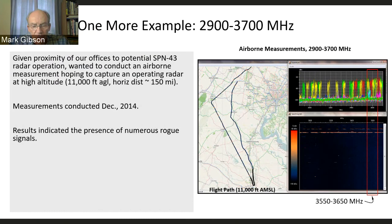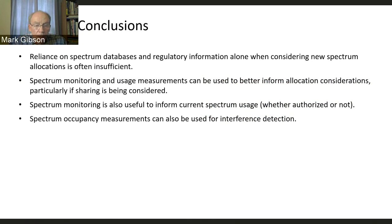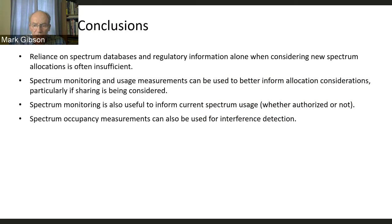In summary: reliance on spectrum databases and regulatory information is insufficient. It's really important to get out and do good measurements using good metrology — and working with the folks at ITS provides the best metrology you're going to find. This also informs allocation considerations, especially where sharing is being considered, such as the new 3,450–3,550 MHz allocation. Spectrum measurements can obviously also be used for interference detection.